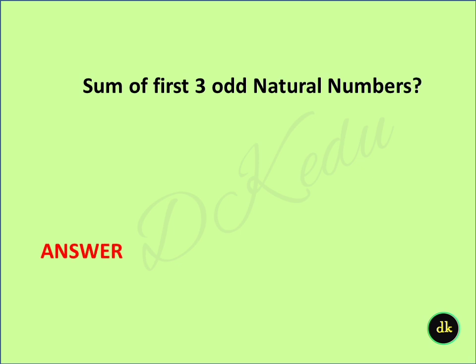Sum of first 3 odd natural numbers? Answer: 1 plus 3 plus 5 equals 9.